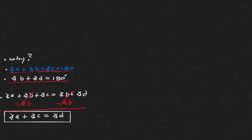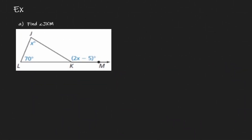Let's take a look at some examples. In this first example we have a triangle and the objective is to find the value of angle JKM. Angle JKM is an exterior angle. I also know the values of two interior angles opposite to it. I know that angle J plus angle L is going to be equivalent to the exterior angle JKM.